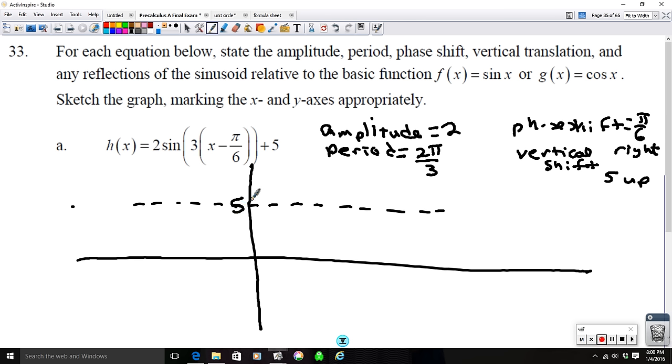So that's your axis. This is your central axis. If amplitude is 2, then we know the maximum value is going to be 2 units. And then our minimum is going to be 2 units down, which is 3.